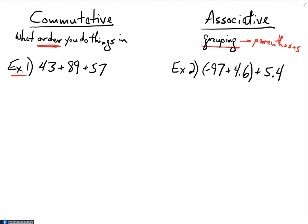That's not that difficult an expression to evaluate. I could just add these numbers together in the order that they're given. In other words, add 43 and 89 together, and then take that sum and add it to 57. However, I notice that two of these numbers, 43 and 57, if I were to add them together first, that's actually a little bit simpler to do because 43 and 57 added together gives me 100, and 100 is a lot easier to work with.